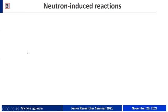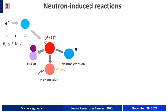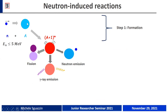In general, we are interested in NECTAR reactions at energies below 5 MeV per nucleon. At this energy, the NECTAR reaction can be described as a two-step process. In the first step — the so-called formation — the neutron is absorbed by the target nucleus, leading to the formation of an intermediate state called the compound nucleus, which is in an excited state.